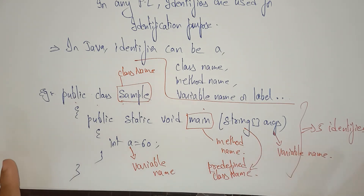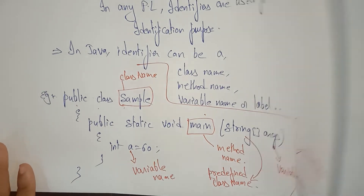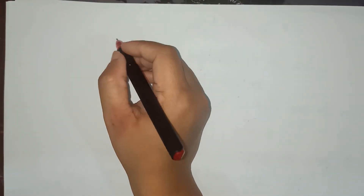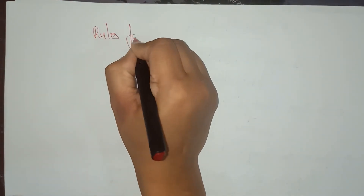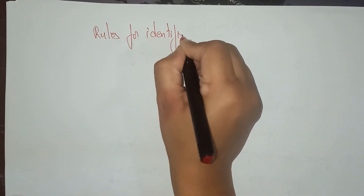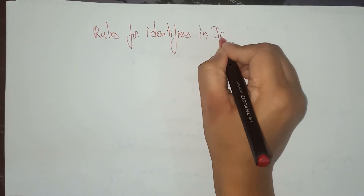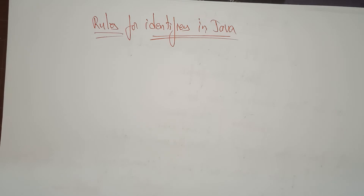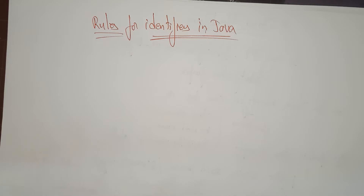I think you understand what exactly identifiers are. There are some rules you need to follow. Identifiers in Java programming language follow specific rules. We have to follow the rules — it is compulsory. While writing the program, if an identifier is not declared properly, then obviously a compile-time error will occur and you can't compile the program.